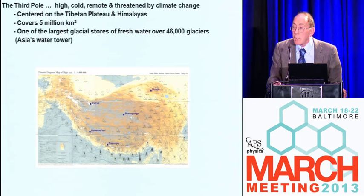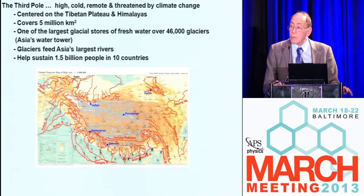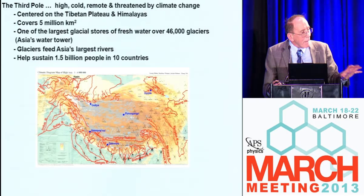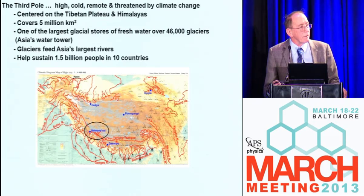If you go to the Himalayas, a very important part of the world — it covers over 5 million square kilometers, one of the largest glacier stores of fresh water, some 46,000 glaciers, most of them unstudied. If you look at the source of the major rivers — the Indus, the Ganges, the Brahmaputra — they source up in the Himalayas, and therefore what happens to those glaciers will have an impact on people, particularly during the dry season. I'm going to take you to one of these — Naimona'nyi, which is the headwater of the Indus, the Ganges, and the Brahmaputra River.